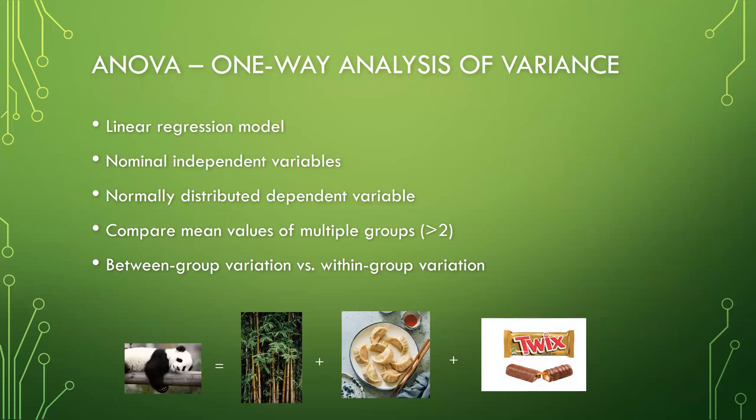ANOVA stands for one-way analysis of variance. It is one type of linear regression model. Usually, we include nominal — in other words, categorical — independent variables in ANOVA. For the dependent variable in ANOVA, we assume the data is normally distributed. When doing the comparison among more than two groups, we usually compare the mean values of our interest among those groups.